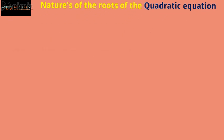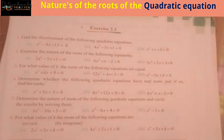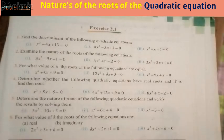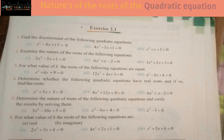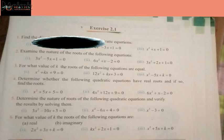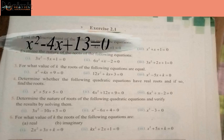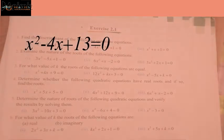Now let us discuss Exercise 2.1 so that we can understand the nature of the roots of the quadratic equation in depth. The first question of this exercise is to find the discriminant of the following quadratic equations. The first part is x squared minus 4x plus 13 equals 0.